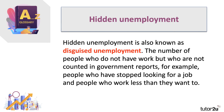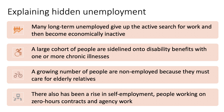A related concept is hidden unemployment, also known as disguised unemployment. This is the number of people who don't have work but who are not counted in government reports — for example, people who've stopped looking actively for a job, and people who work less than they want to. The stark reality is that many long-term unemployed give up the active search for work even though they desperately want to work, and oftentimes their morale and psychology suffers greatly. A large cohort of people are sidelined onto disability benefits with chronic illnesses, and that inequality has become transparent during the pandemic. Many people would like to work but can't find suitable jobs or hours because they must care for elderly relatives. There has also been a rise in self-employment, zero-hours contracts, and temporary agency work — you can make a case that there's a degree of hidden unemployment there.